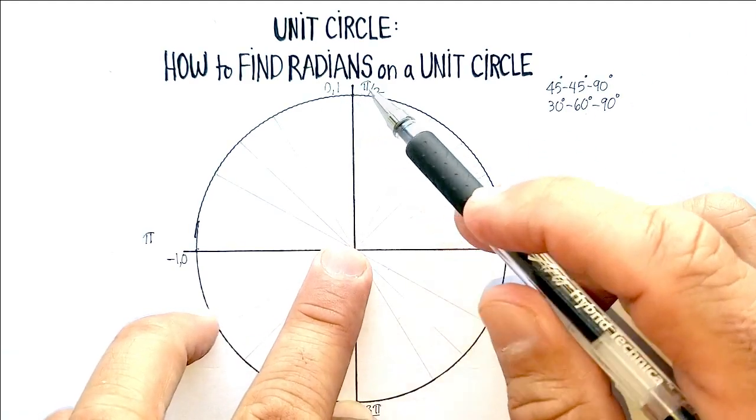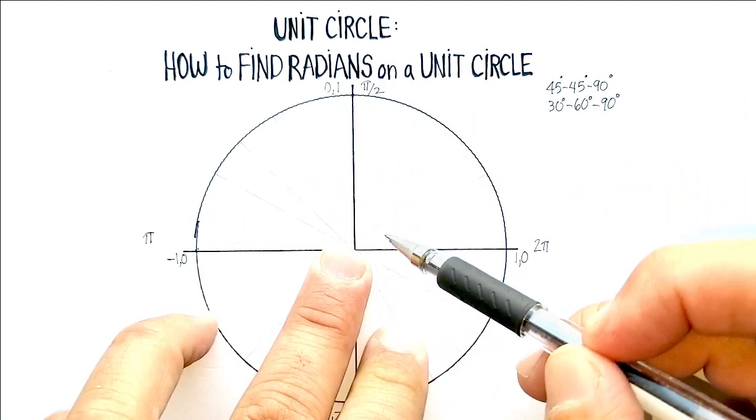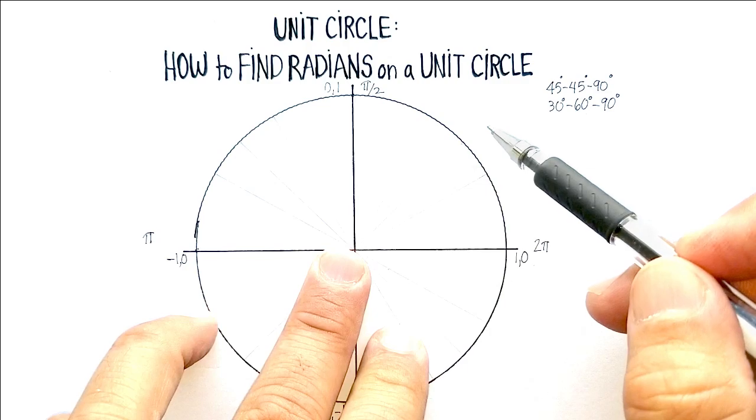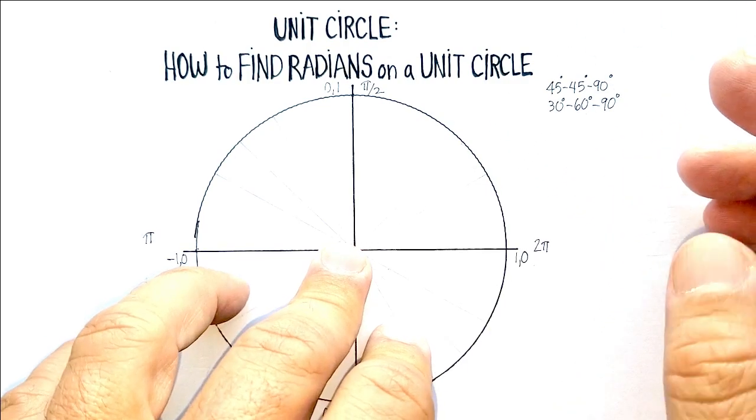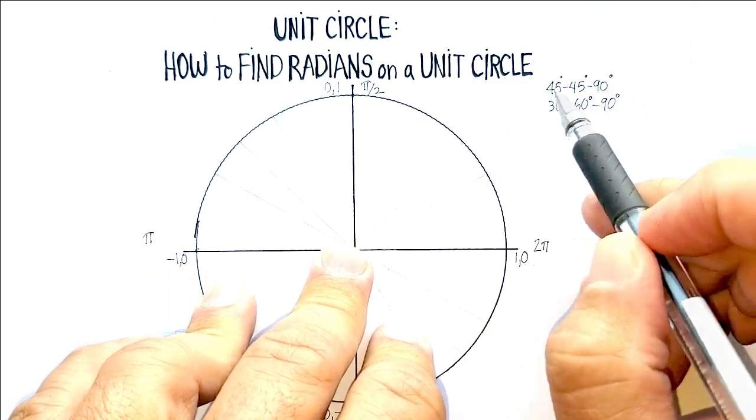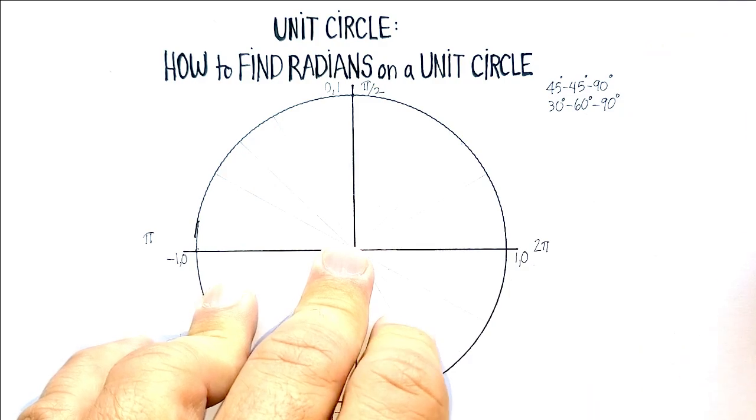Now, we're going to take half, just like we did here, but then we're going to divide it up into fourths. That's our next unit. And that's the 45, 45, 90. Again, see if you can follow why.